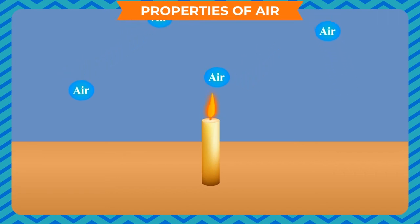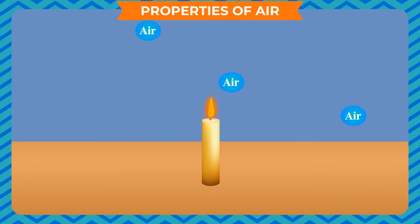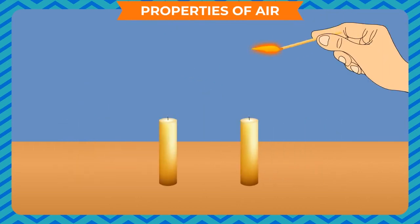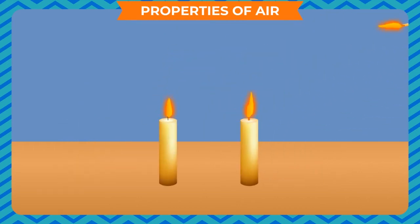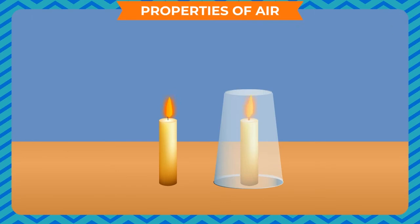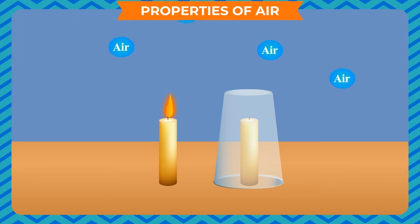Air supports burning: air is required for burning. The oxygen gas present in the air supports burning; in the absence of air, burning cannot take place. To prove this, take two candles and light them. Cover one of them with a glass — within a few seconds, that candle goes out. This happens because the covered candle did not get air for burning. This shows that air is essential for burning.